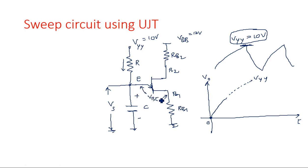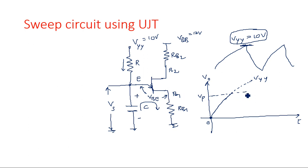When the voltage across the capacitor reaches the junction threshold, the transistor comes into the on state. When the transistor turns on, the capacitor stops charging and begins to discharge through the RB1 resistance. When the capacitor reaches the peak voltage — which is the cut-in voltage of the transistor — it immediately turns back and tries to discharge down to a minimum voltage near zero, but it will not go below the valley voltage VV.